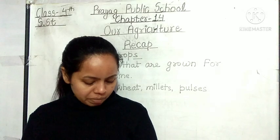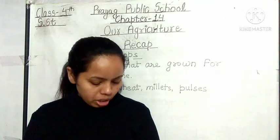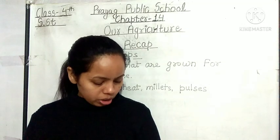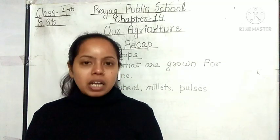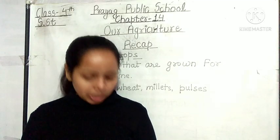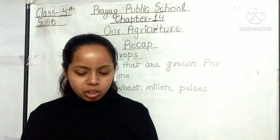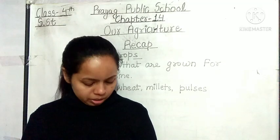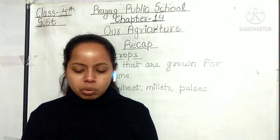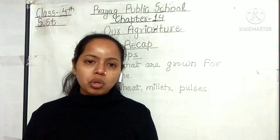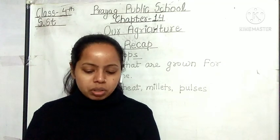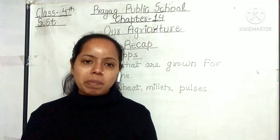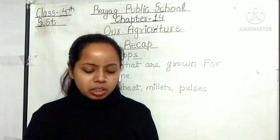Next is jute. Jute grows well in a hot and wet climate — jute hot aur wet climate mein bahut achhi tarah se ugta hai. It is called the golden fiber of India — ise Bharat ke sone ke reshe ke roop mein jana jata hai. West Bengal, Assam, Bihar, and Odisha are the main jute-producing areas. Jute is used to make bags and carpets.